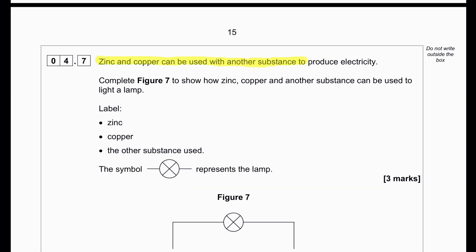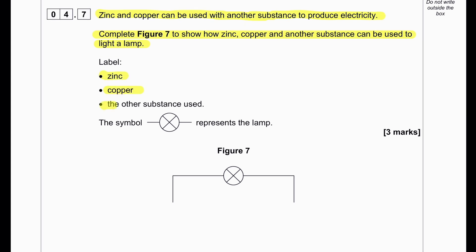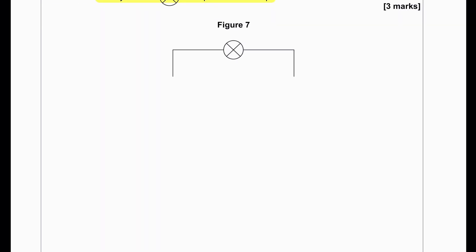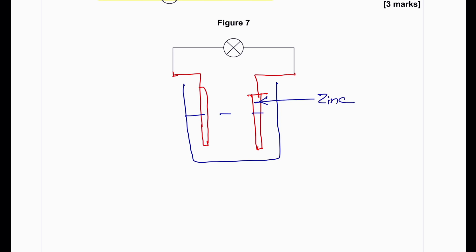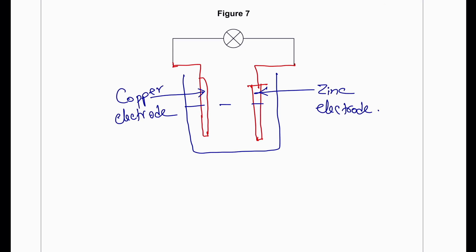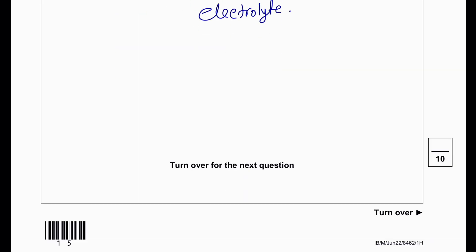Zinc and copper can be used with another substance to produce electricity. Complete Figure 7 to show how zinc, copper and another substance can be used to light a lamp. To complete the diagram, we need to have two electrodes that will be immersed in a solution. One of the electrodes would be zinc, the other electrode will be copper.